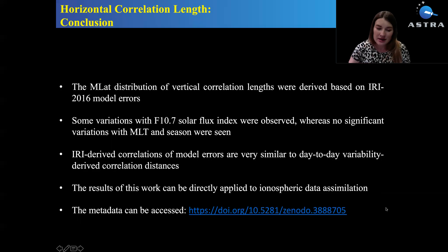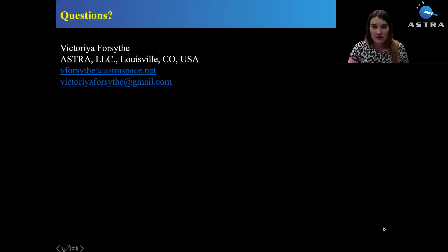I have put the metadata into the depository with this link, you can access it. It's a NetCDF file that describes the magnetic latitude distribution of vertical correlation length that can be used for the construction of covariance matrix. If you have any questions, please write me an email. Here is my email. Thank you very much for your attention.